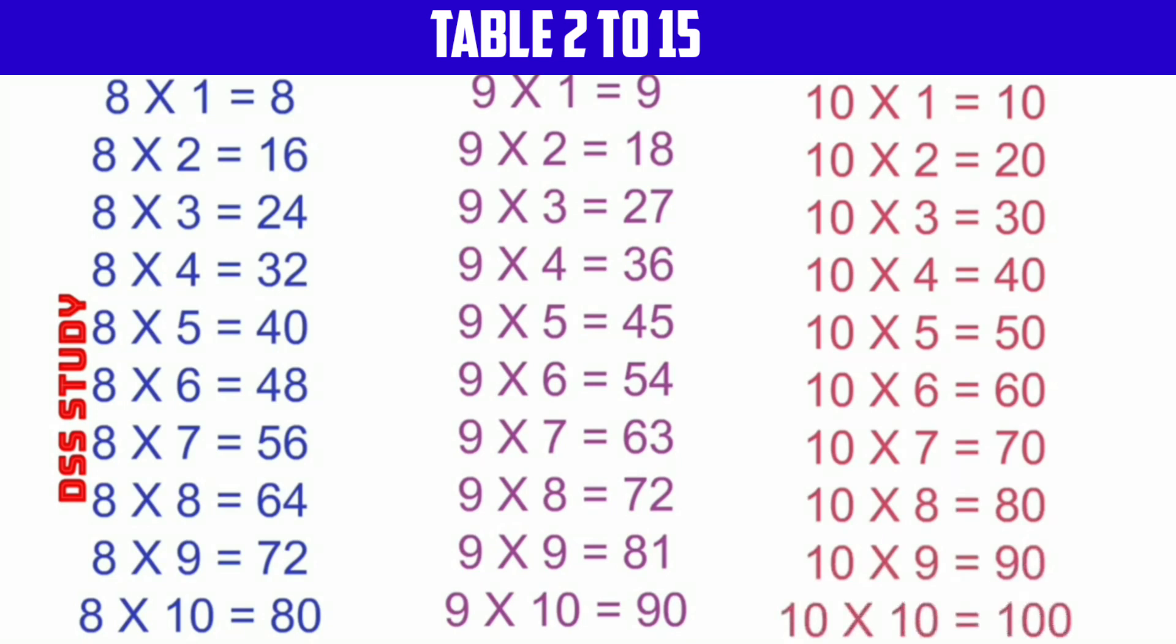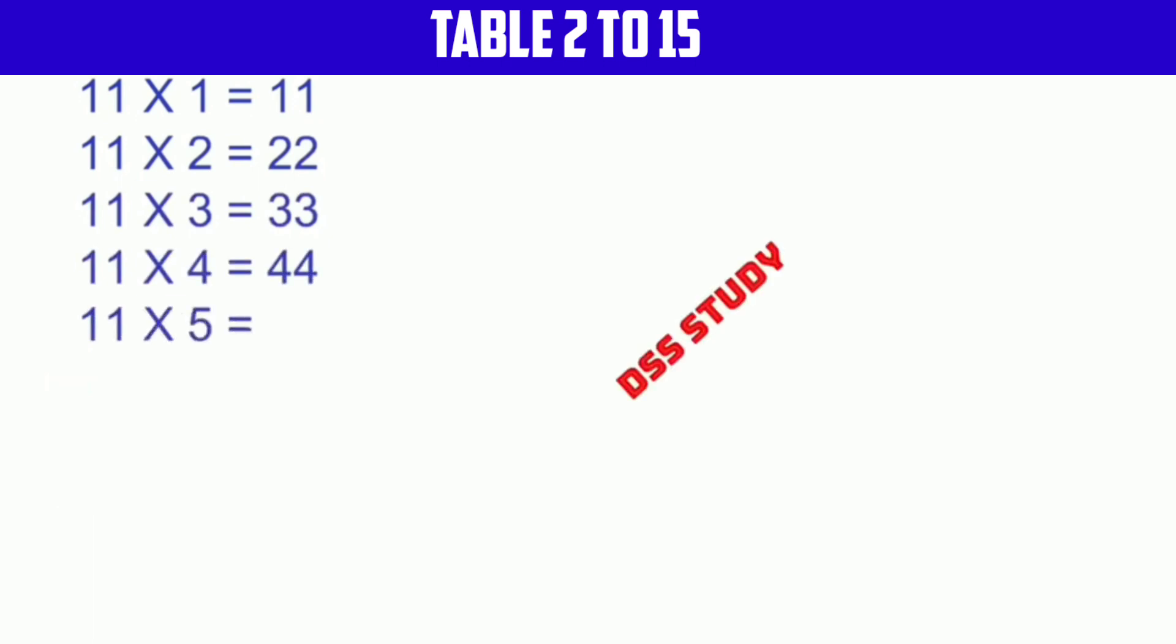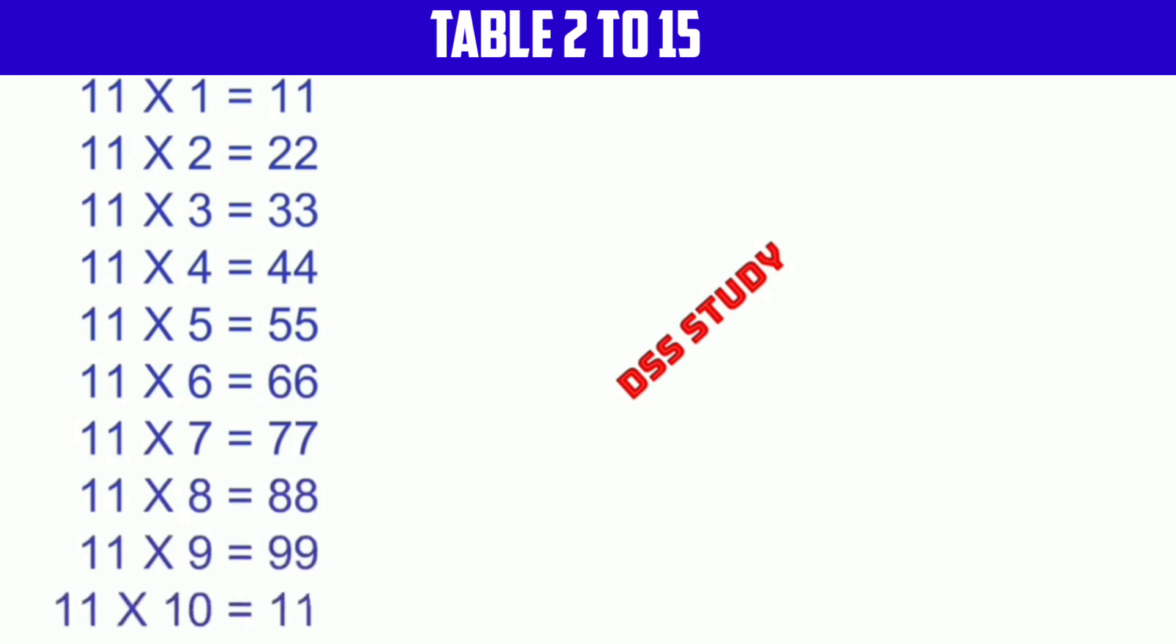11 times 1 is 11, 11 times 2 is 22, 11 times 3 is 33, 11 times 4 is 44, 11 times 5 is 55, 11 times 6 is 66, 11 times 7 is 77, 11 times 8 is 88, 11 times 9 is 99, 11 times 10 is 110.